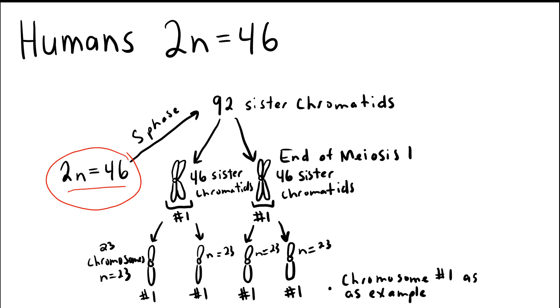Prior to division, the genetic material must be duplicated. And this happens in S phase of interphase. So I draw that going up to represent the doubling of those 46 chromosomes. If you double 46, you get 92. We call those duplicated chromosomes sister chromatids. So we have 92 sister chromatids.